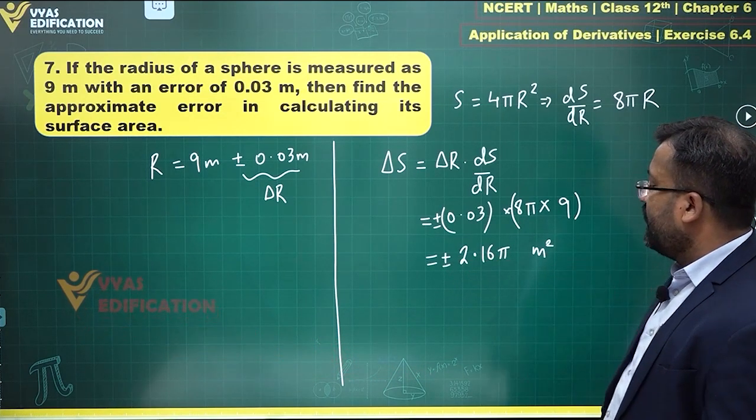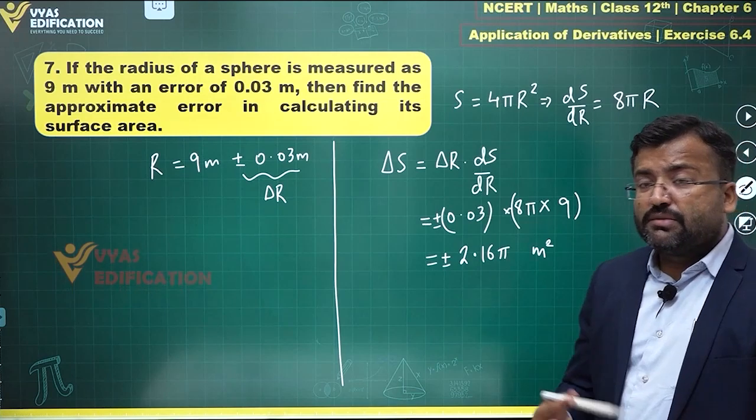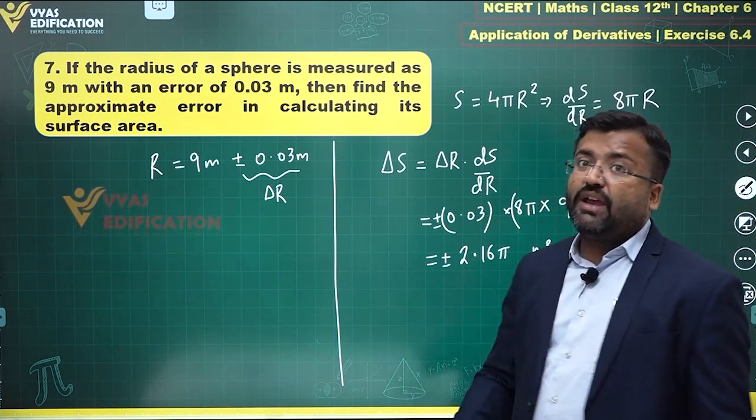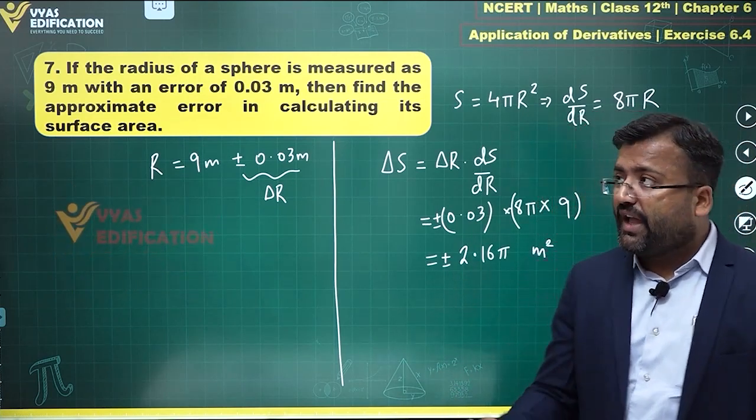So the approximate error in surface area is plus or minus 2.16π meter square — that is, plus or minus 6π meter square. The surface area is measured in meters squared.